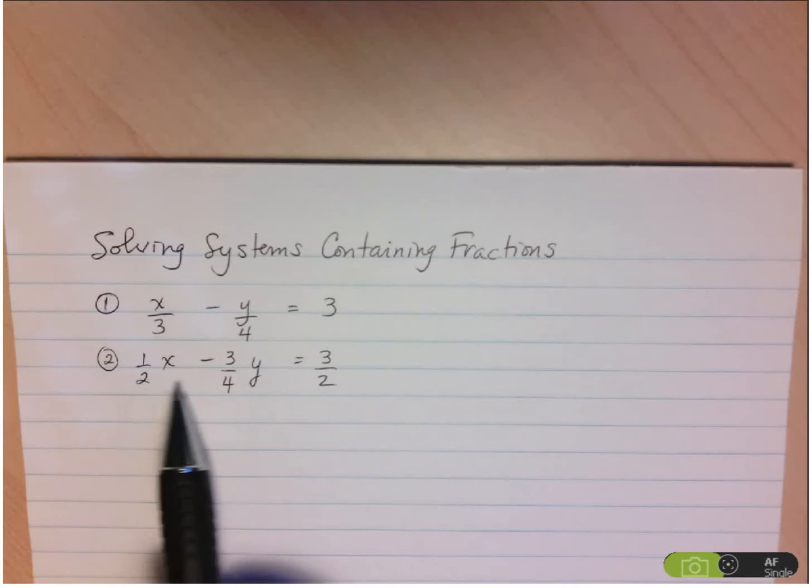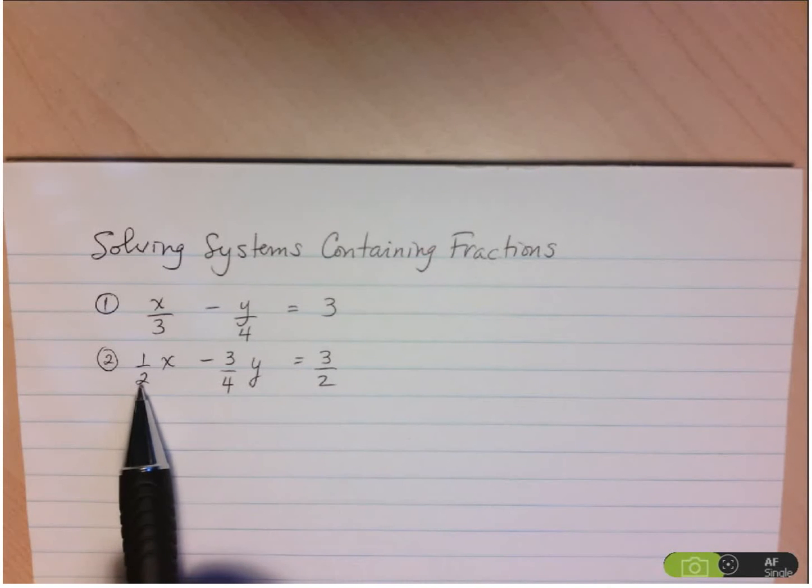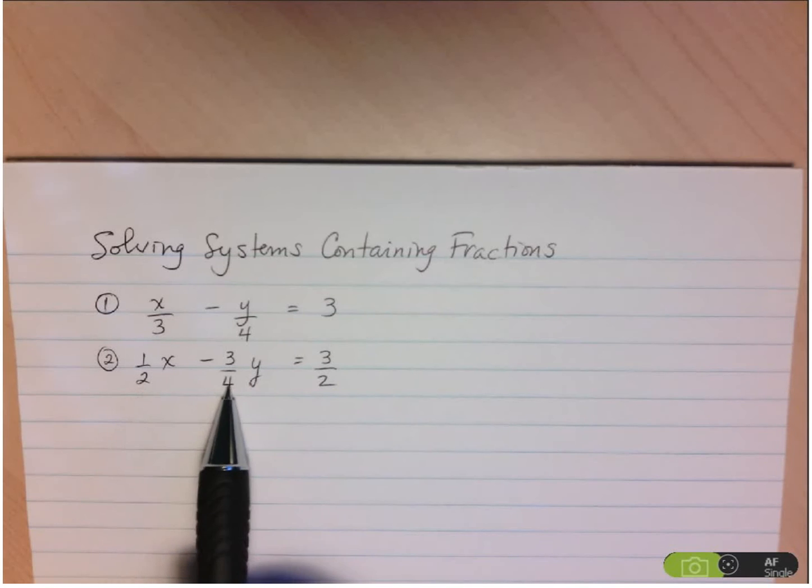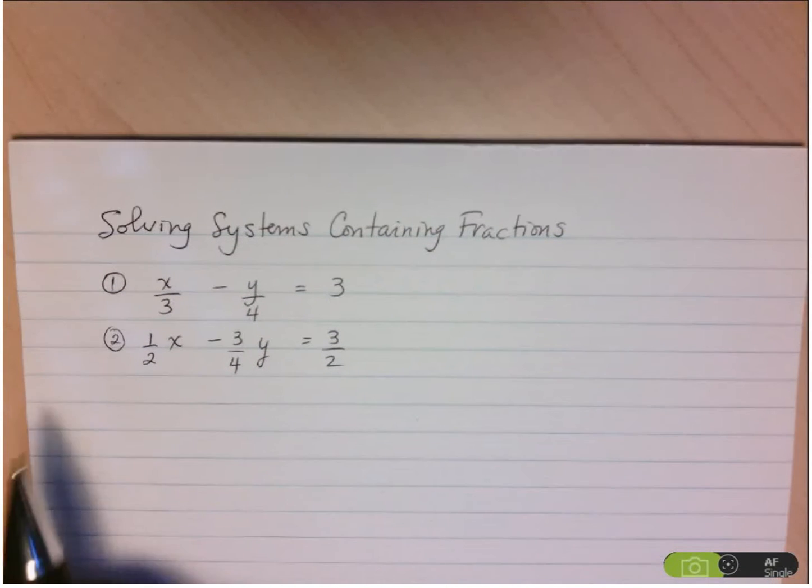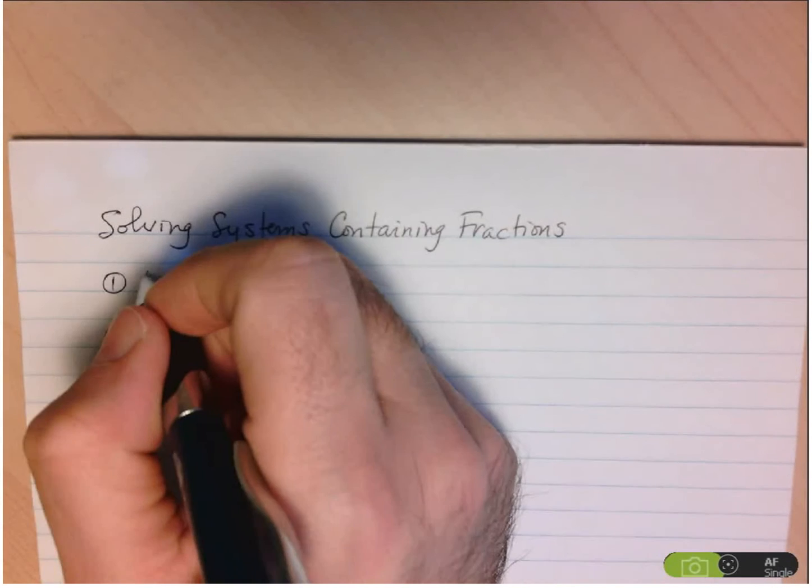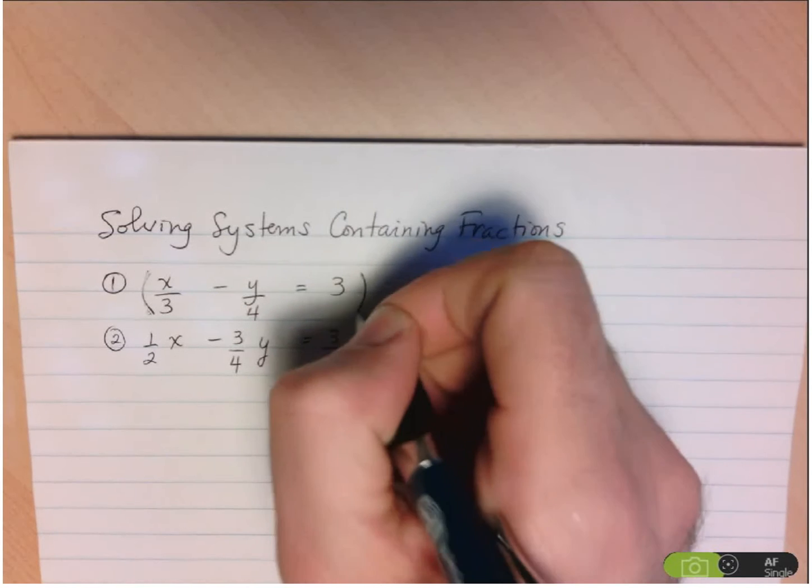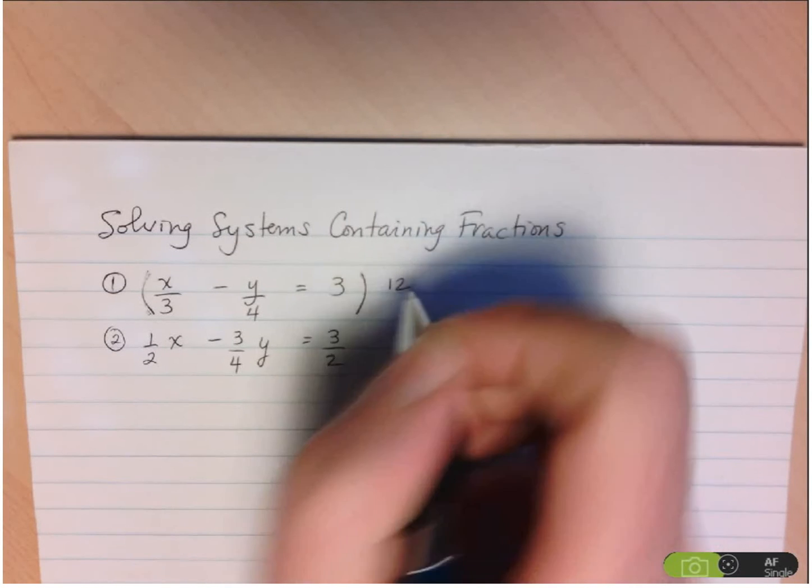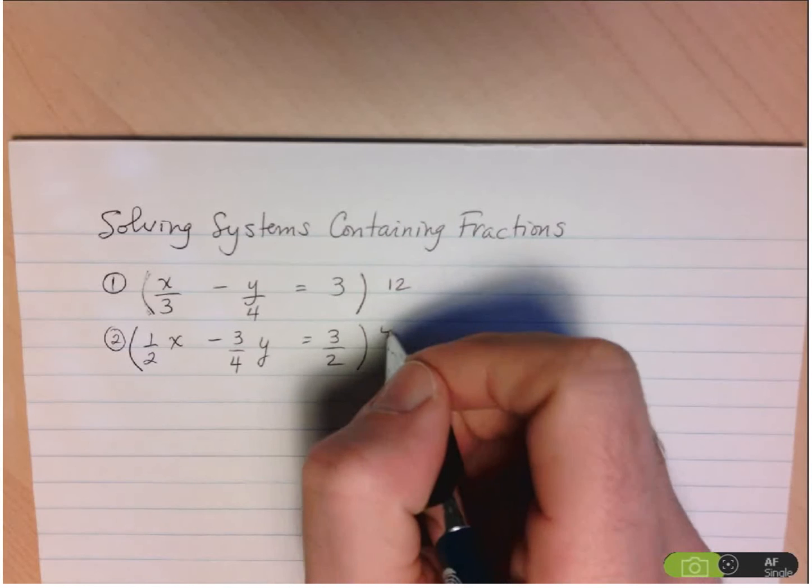Take a look at the second equation. What would we multiply both sides of the equation by? And we realized that if we multiplied everything by 4, it would eliminate all the denominators. So before we even start solving the system, we clear out all the denominators. So I'm going to multiply equation 1 by 12, and I'm going to multiply equation 2 by 4.